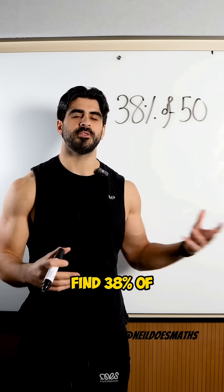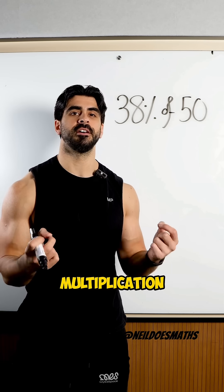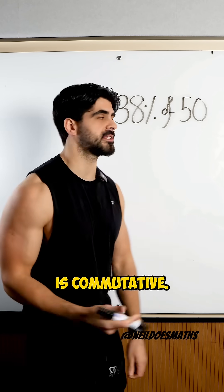For example, if I want to find 38% of 50, 'of' meaning multiplication means that we can switch the numbers around because multiplication is commutative.